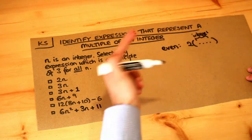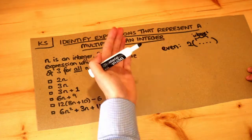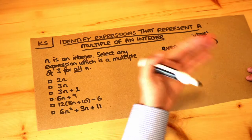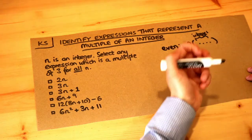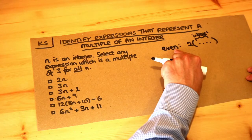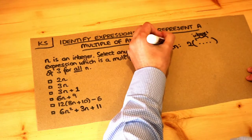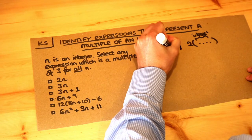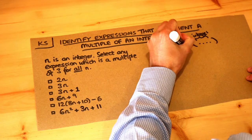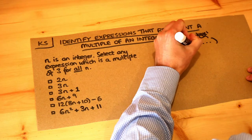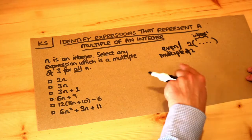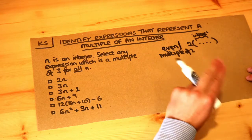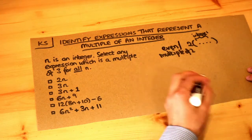Two times anything is always going to give you an even number — two times three is six which is even, two times four is eight which is even. Two times anything is guaranteed to be even. Another way of saying even is that it's a multiple of two. We can use this same kind of form to show that some expression is a multiple of some other number.